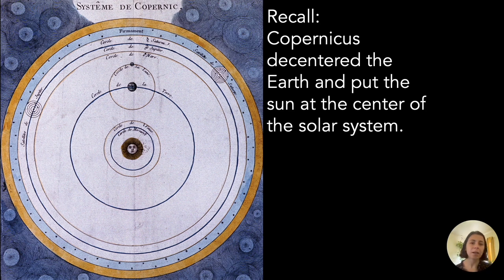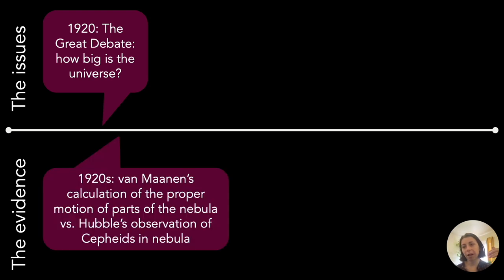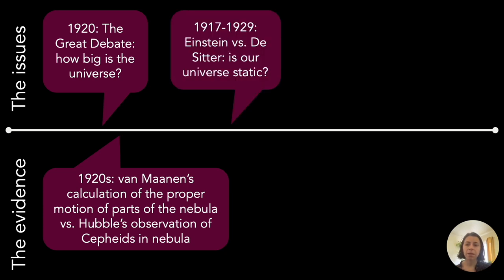The story unfolds in three main episodes. First, in 1920, there was the Great Debate — the debate over how big the universe is. The evidence bearing on this debate includes Van Maanen's calculation of the proper motion of parts of the nebula, and also Hubble's observation of Cepheids in the nebula. The next episode concerns whether the universe is static — a debate between Einstein, De Sitter, and Eddington about whether the universe is dynamic, changing, or static.